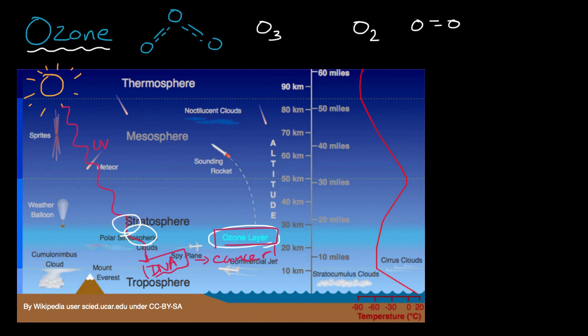We also know that certain chemicals that we human beings have produced, in particular what's often known as chlorofluorocarbons (CFCs), and that's just a fancy way of saying molecules that are hydrocarbons—a bunch of carbons and hydrogens—that also involve chlorine and fluorine.